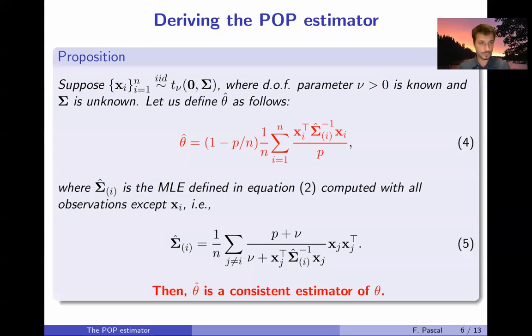So let's go for the main contribution of this work, what we've called the POP estimator. We assume that we have this n sample of T-distributed data with nu the degrees of freedom. Let us define theta hat as follows. There is this quantity one minus p over n, a squared quantity that involves both the dimension and number of data. These terms come from random matrix theory, so it's detailed in the proof in the paper. And this quantity is multiplied by this empirical mean involving this quadratic form depending on both the data and an estimator sigma hat i.